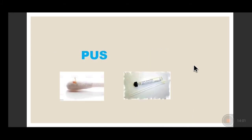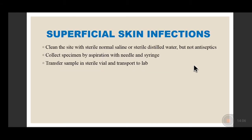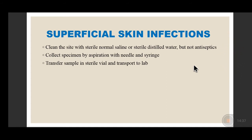The next common sample is from superficial skin infections. Superficial skin infections should be irrigated with sterile normal saline or sterile distilled water before collecting the sample — this flushes off the commensal flora. There should be no antiseptic, because antiseptic will kill the pathogen and give false negative results. Then aspirate the specimen with a needle and syringe and transfer it in a sterile container, transporting it to the lab as soon as possible.